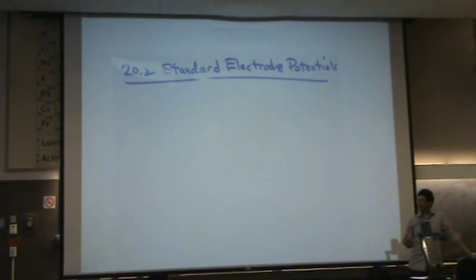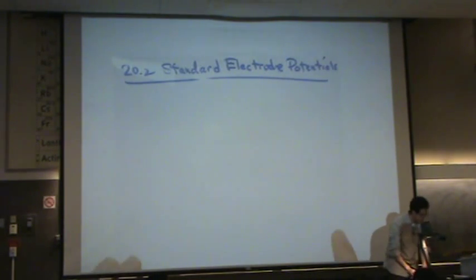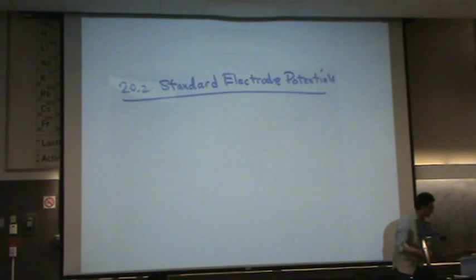Each half reaction, like you saw in a previous table, is going to have its own voltage. So every reduction half reaction is going to have its own potential. And what we do is we pick one to make zero.